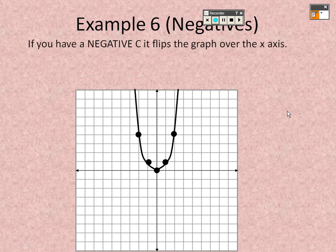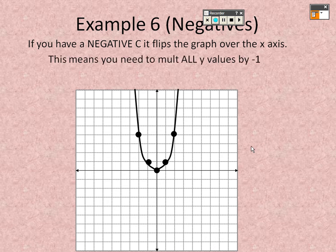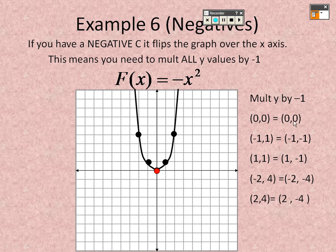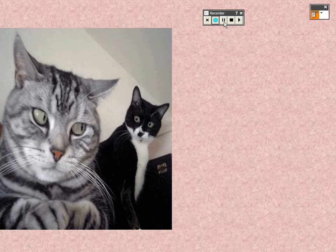A negative multiplier flips the graph — you multiply all y-values by −1. So (−1,1) becomes (−1,−1), (1,1) becomes (1,−1), and (−2,4) becomes (−2,−4). The point (0,0) stays the same when multiplied by a negative. Basically you're taking all the points and flipping them over the x-axis. And we'll finish up here when we come back.